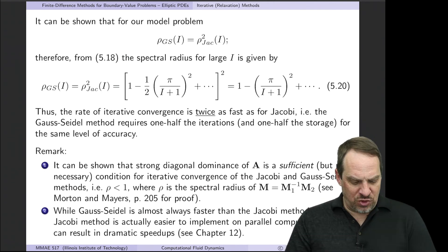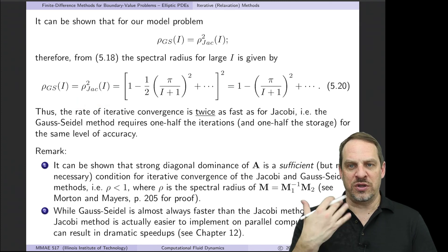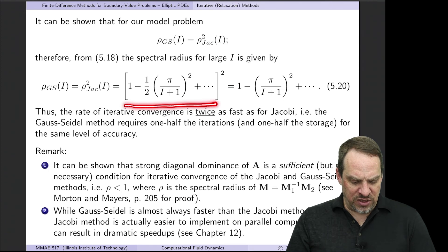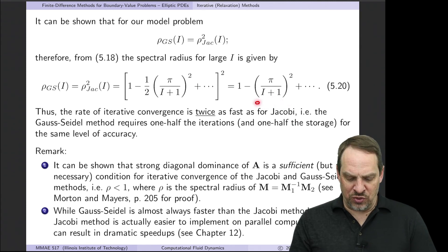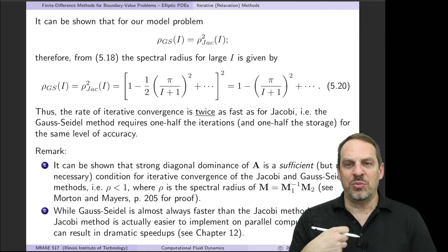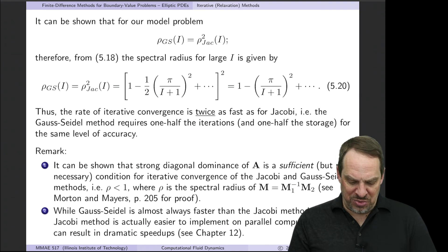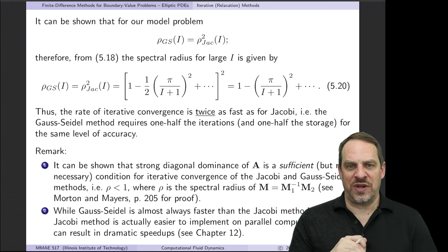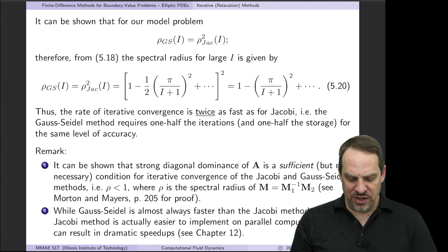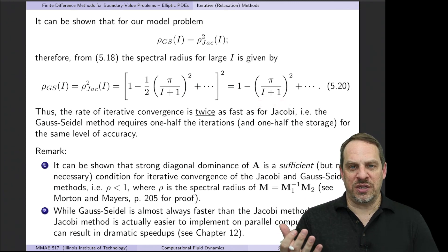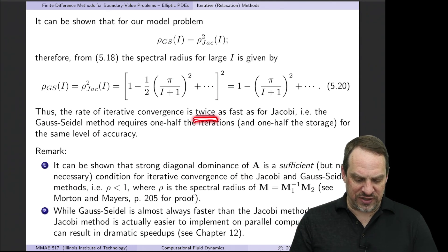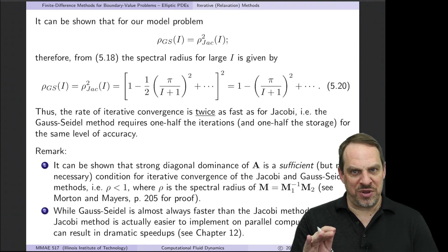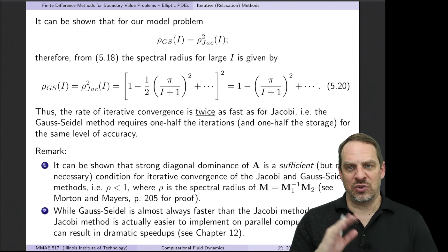Since the spectral radius is always less than 1, squaring it makes it smaller. So Gauss-Seidel's spectral radius for the model problem is always less than Jacobi's. For large Î: ρ_{GS} ≈ 1 − (π/(Î+1))². Comparing with Jacobi, the correction term is twice as large, meaning Gauss-Seidel converges twice as fast. It also requires only half the memory. So it's a complete win — no price to pay for switching from Jacobi to Gauss-Seidel.